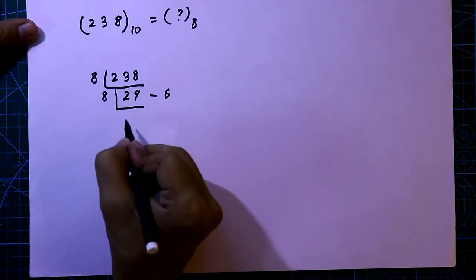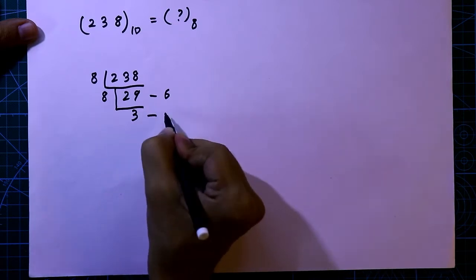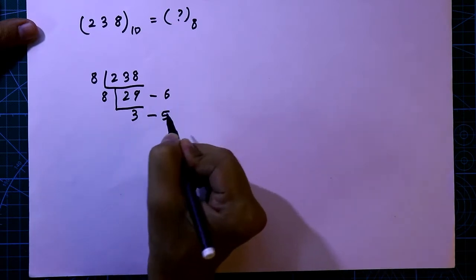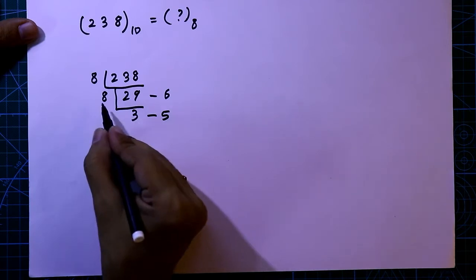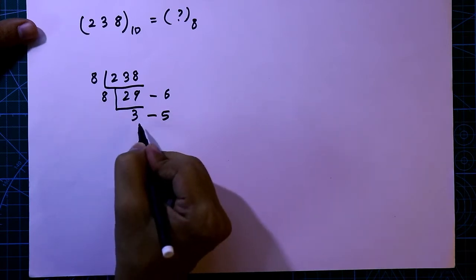29 divided by 8, it is 3, remainder will be 5. Now, the quotient is less than 8, so we have to stop here.